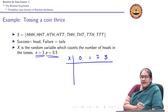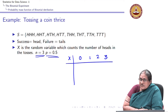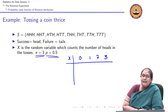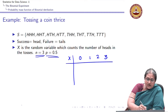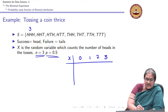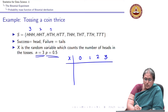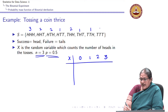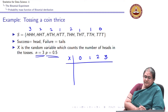What is x doing? x is counting the number of successes, which here means counting the number of heads. When I count the number of heads across all outcomes, I see: 3 heads here, 2 heads here, 2 heads here, 1 head here, 2 heads here, 1 head here, 1 head here, and no heads here.